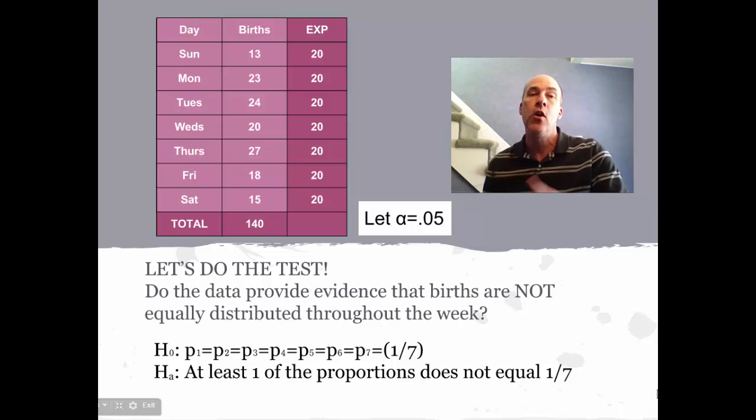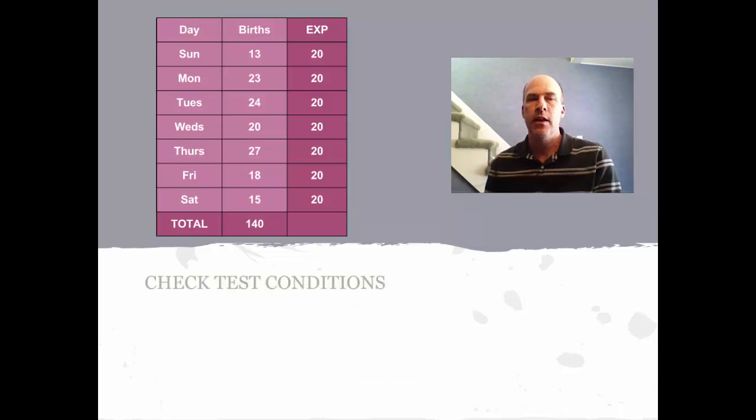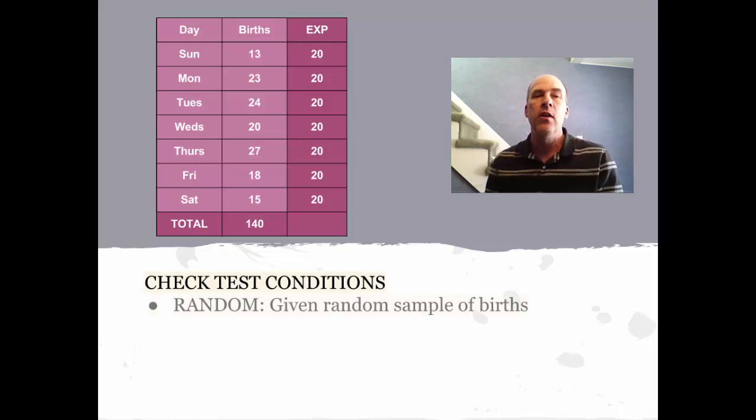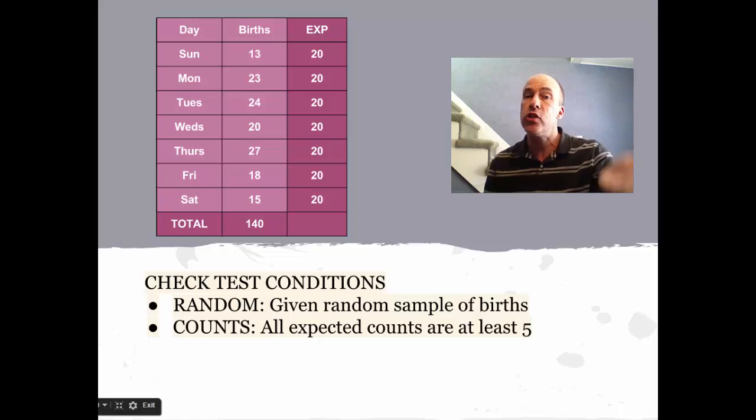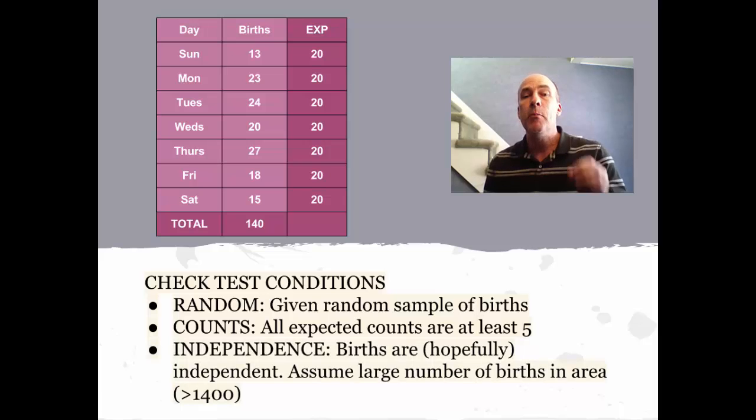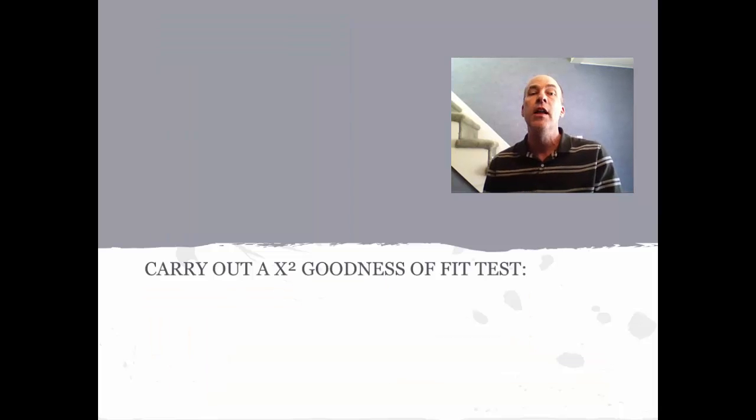Let's check our conditions. Three conditions to check. First, random sample: I would hope that these are a random sample of births from the hospital. Counts: all of our expected counts are 20, which are all greater than five—that's good news. Finally, independence: the births are hopefully independent. I'm not quite sure here because what if there were twins or triplets on one day? Those wouldn't be independent. But I'm going to assume independence from birth to birth, and I'll also assume that these represent a sample from a large population of births at this hospital.